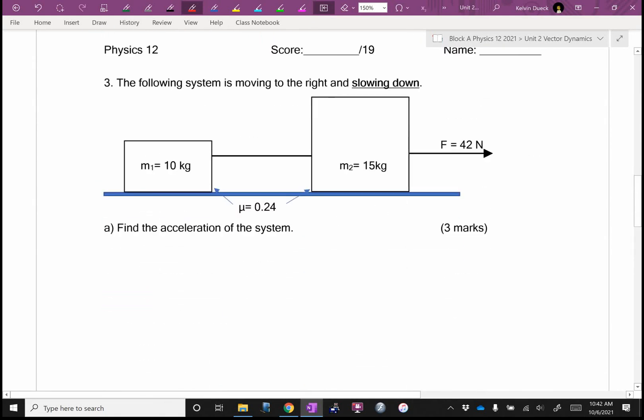The following system is moving to the right and slowing down. Find the acceleration. Okay. Free body diagram. I'm going to have M1G, normal force number 1, tension. And I guess there's friction, so I'll have friction force number 1.